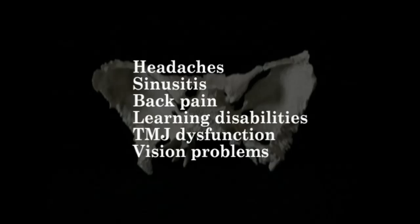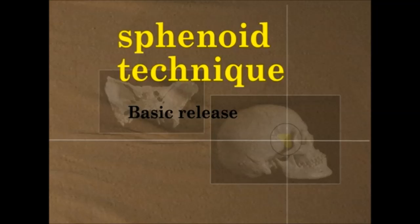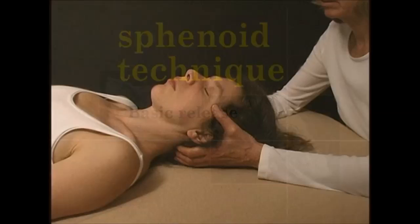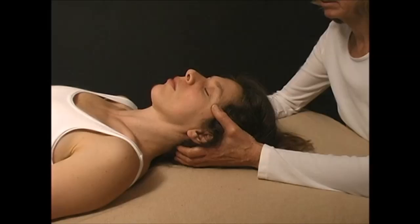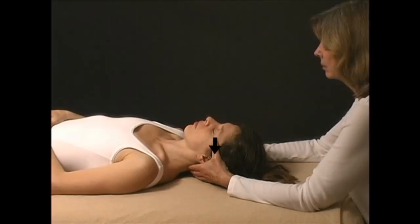Our first technique is the sphenoid release. Sit at the head of the table and lightly rest your fingers on the occiput. Place your thumbs over the wings of the sphenoid bone. As the sphenoid is halfway between flexion and extension, very gently encourage the greater wings to move posterior or towards the table. This motion compresses the sphenoid towards the occiput. Hold the sphenoid in compression for a few seconds until you feel it start to gather energy or ask to be decompressed.